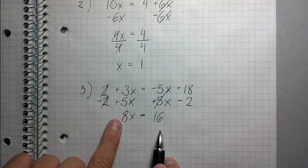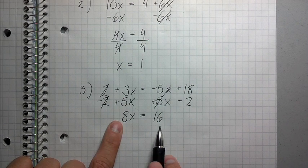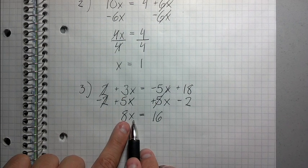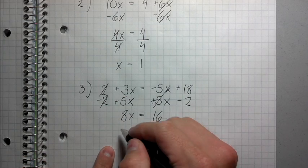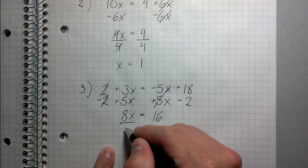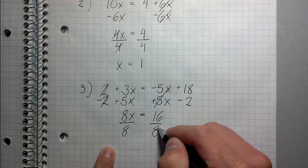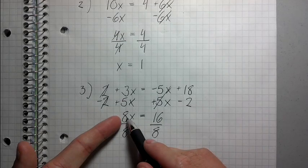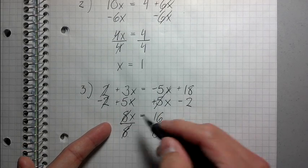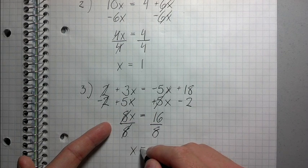Now I'm in a very good situation because I've gotten down to a number times x equals some number. It's very simple to solve now. I just divide by 8. Division by 8 cancels out multiplication by 8. So that goes away, and x equals 2.